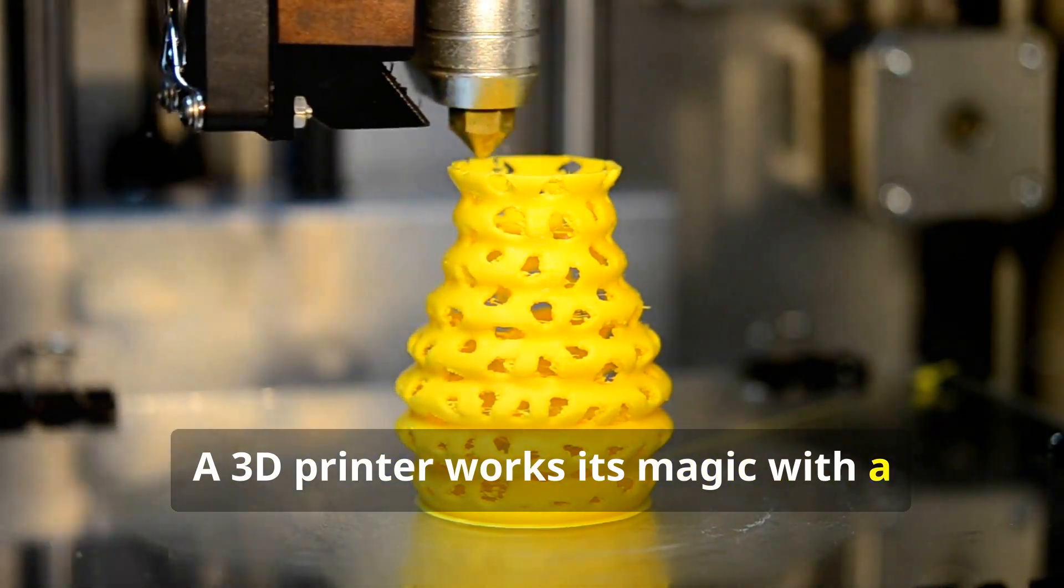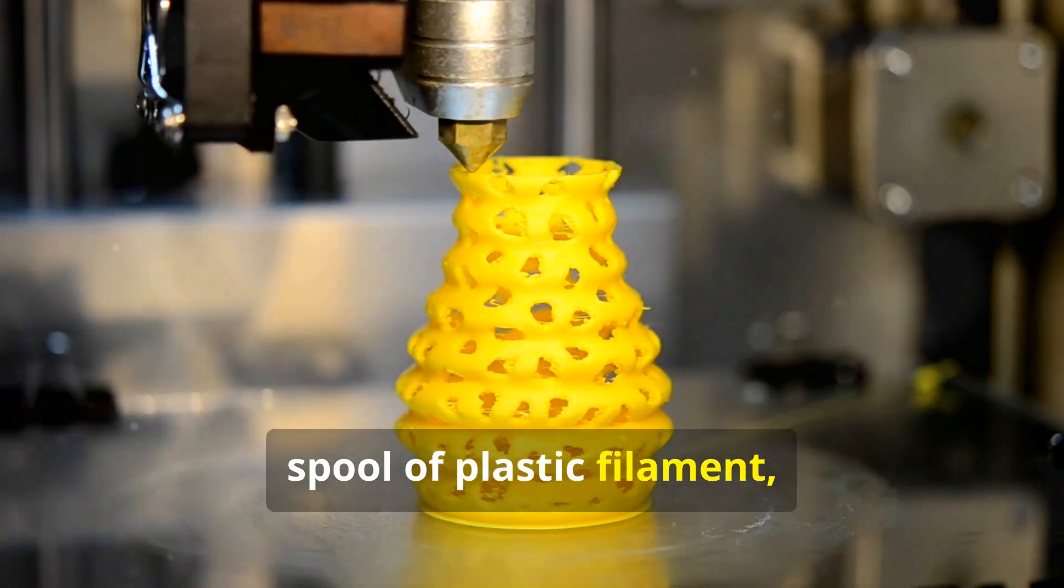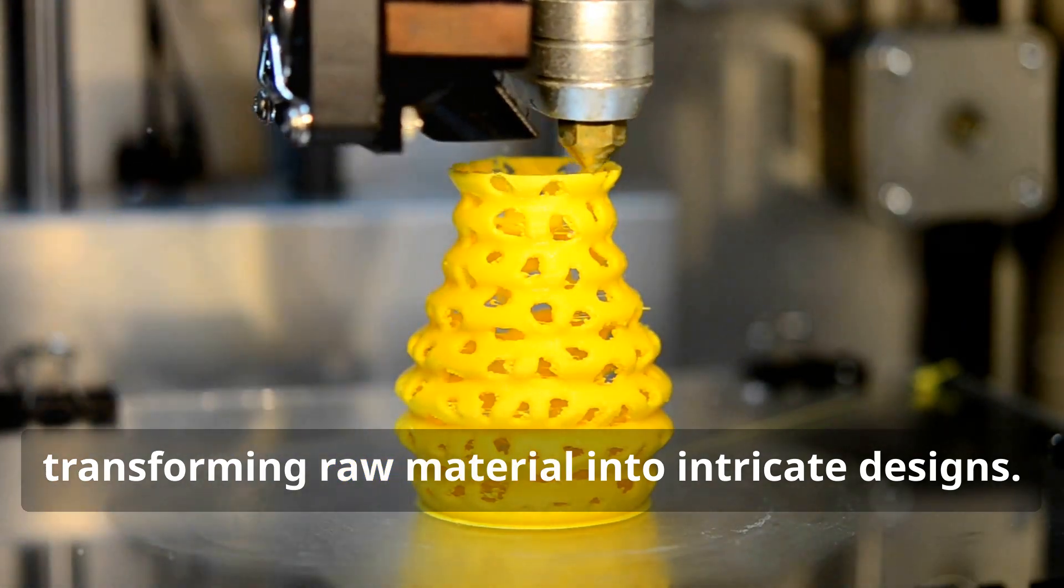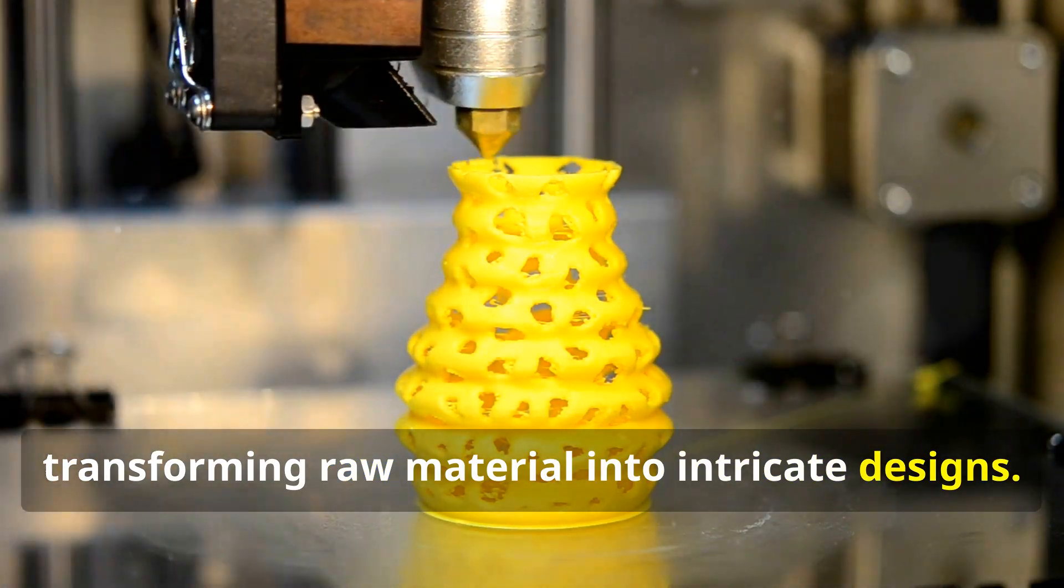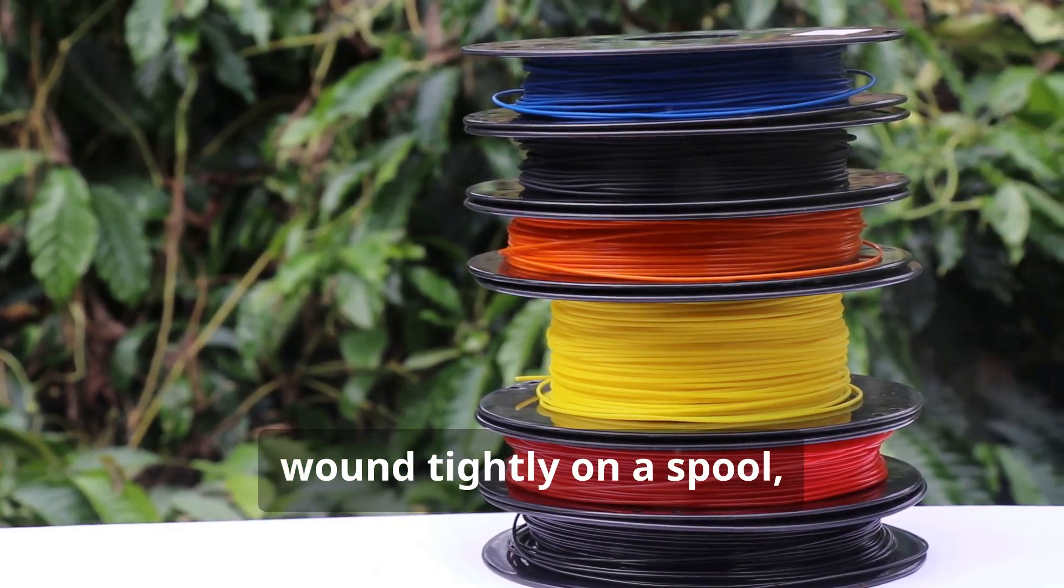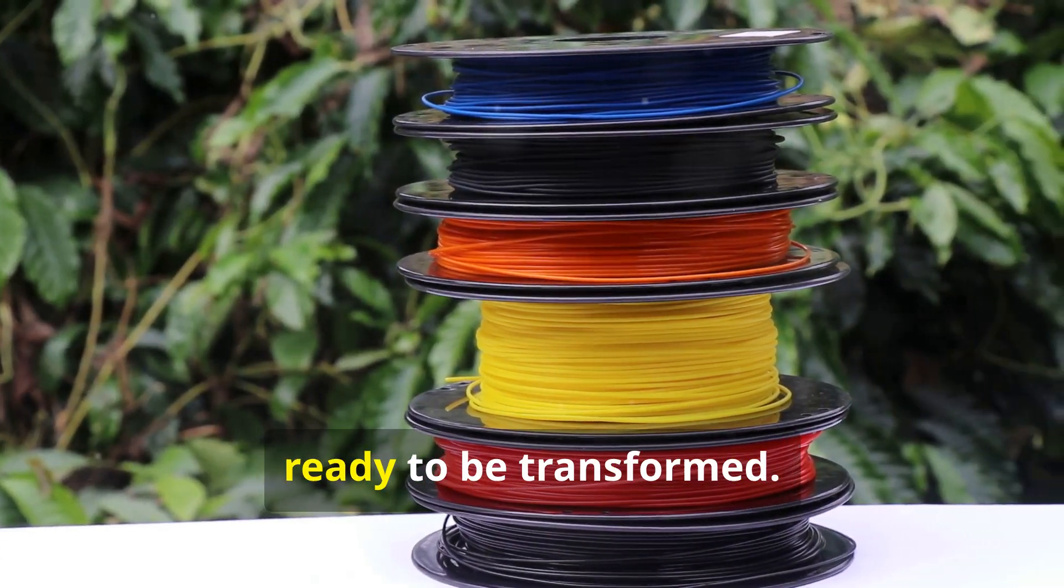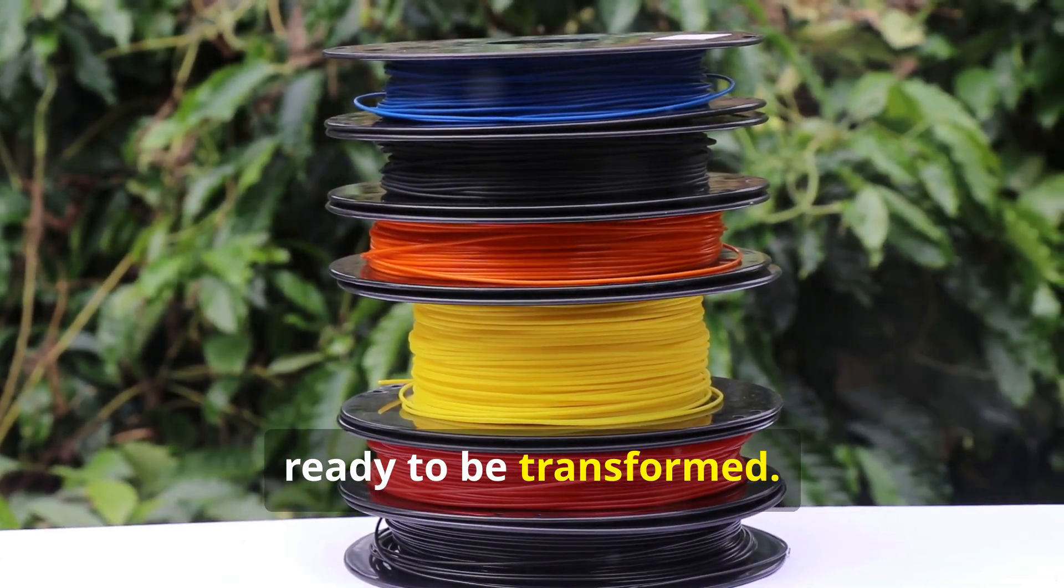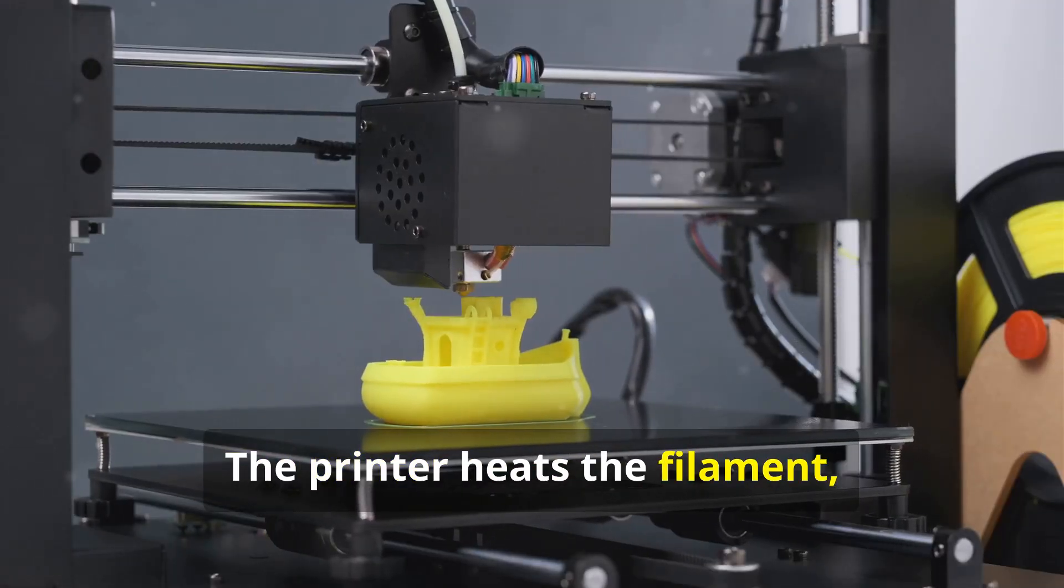A 3D printer works its magic with a spool of plastic filament, transforming raw material into intricate designs. This filament is like a long thin thread of plastic, wound tightly on a spool, ready to be transformed. The printer heats the filament, turning it into a liquid.